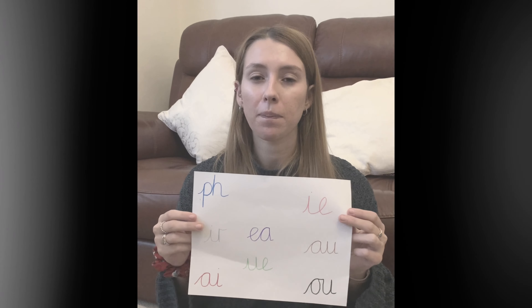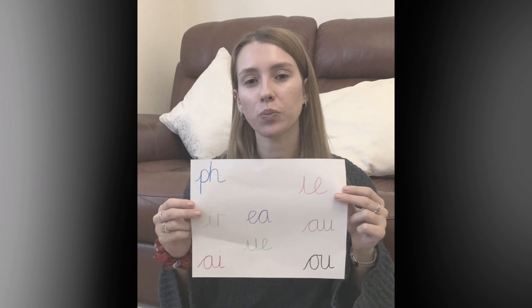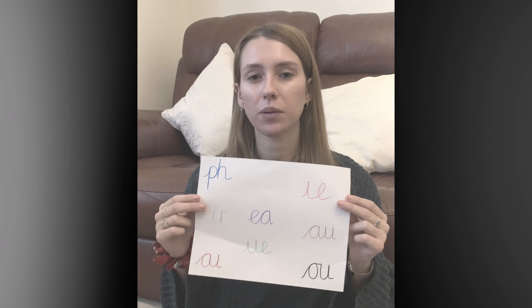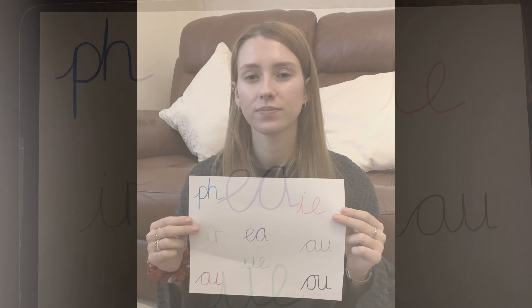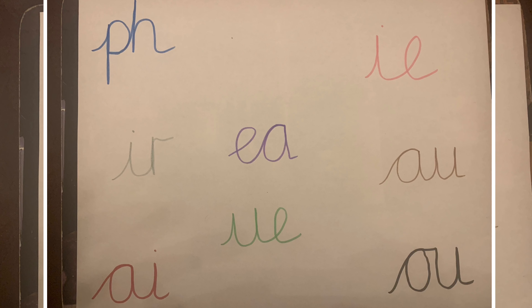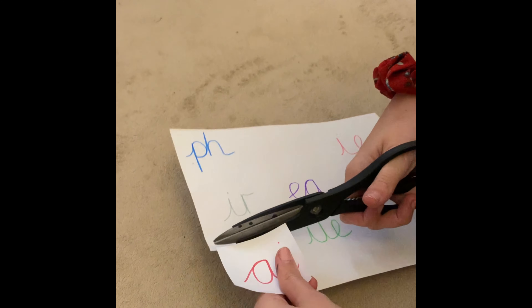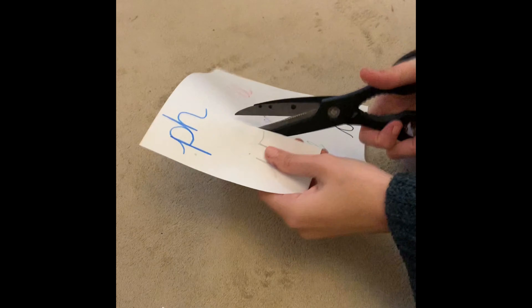In a minute you're going to see a page just like this one I'm holding up and you're going to write down those digraphs on a piece of paper. Next we're going to cut out all of the digraphs so that they're all on separate pieces of paper.